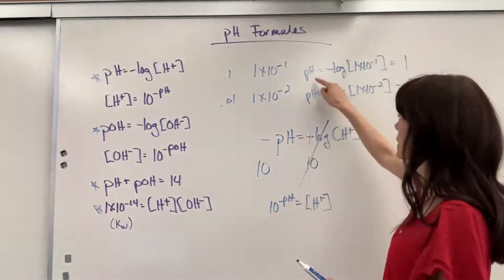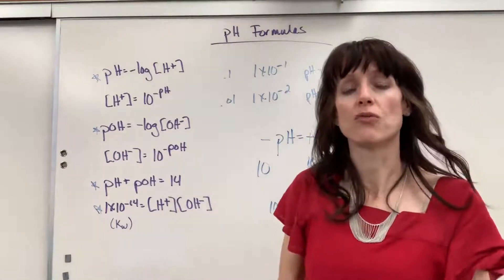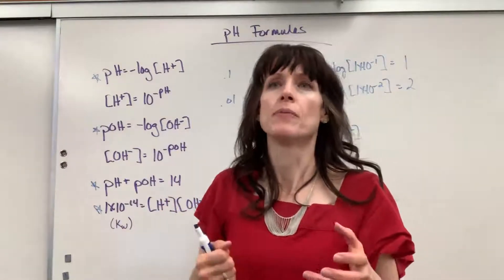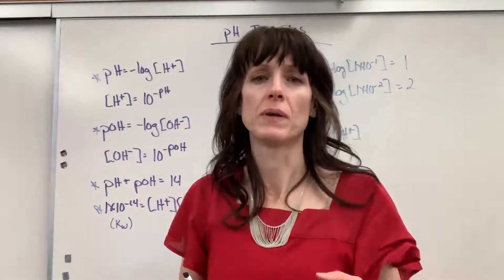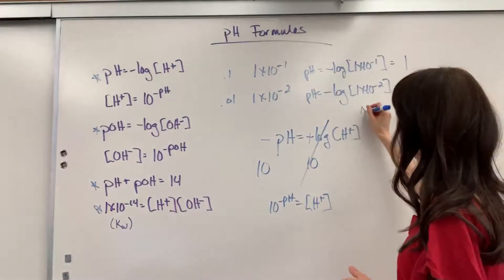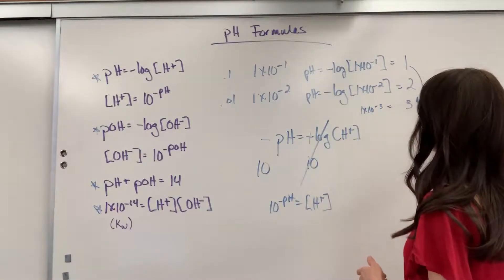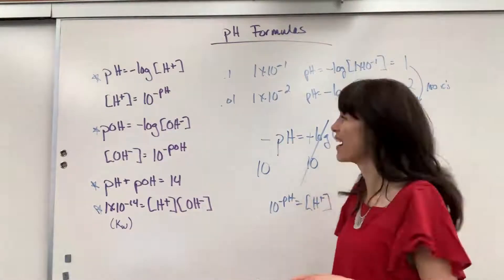So, if I change this to POH, if POH was 1, POH was 2, POH of 1 is going to be 10 times stronger than a POH of 2. A POH of 1 is going to be 100 times stronger than a POH of 3, because that would have been 10 to the minus 3. 1 times 10 to the minus 3 gives me 3. So, this difference is 100 times. Same principle with the log.